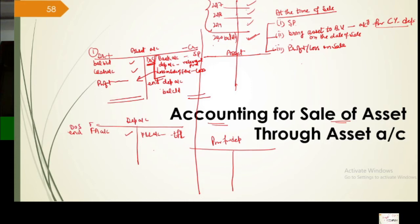These three entries are posted at the time of sale. Likewise when depreciation comes, on the date of sale we charge depreciation on the fixed asset — that depreciation also goes into the depreciation account and total amount gets transferred. This is how recording is done. These three things get additionally entered on the date of sale; the rest of the question's account continues as before.